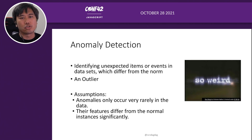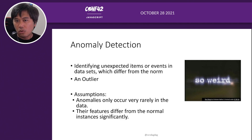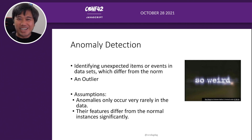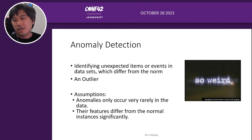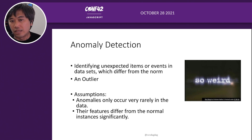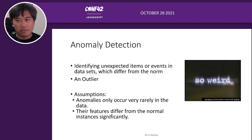What is anomaly detection? It is identifying unexpected items and events which are different from what is normal — something weird, like a pandemic, that we're not used to. We're getting used to it now, so it's becoming the new normal. It's sometimes called an outlier. The assumptions are that anomalies rarely occur in your data and that their features differ significantly from normal instances.